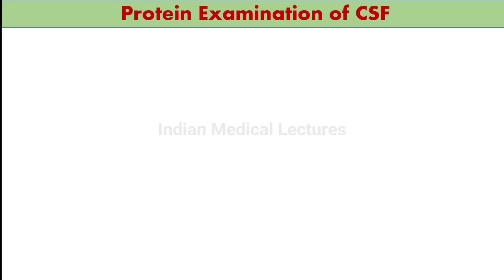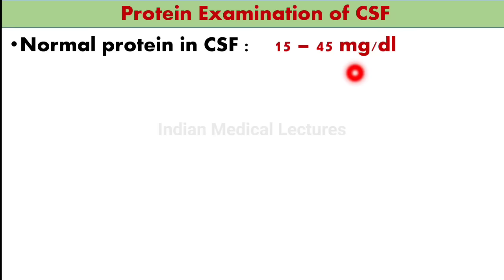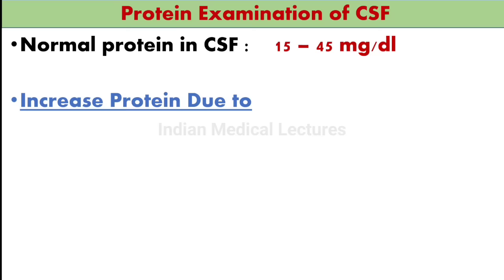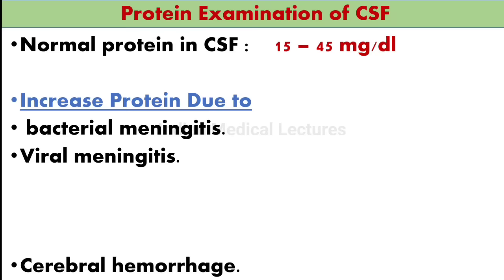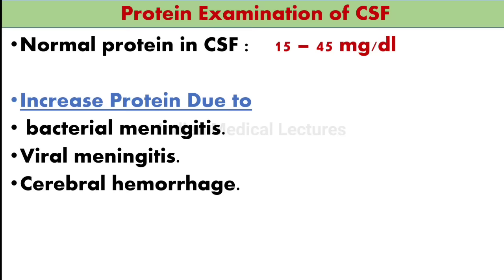Biochemistry examination of CSF: First, protein examination. Normal protein level is 15–45 mg per deciliter. If protein is increased in CSF, it may indicate: bacterial meningitis, viral meningitis, cerebral hemorrhage — meaning bleeding in the brain — or tumor. Remember: normal protein is 15–45 mg per deciliter, and these diseases cause increased protein.